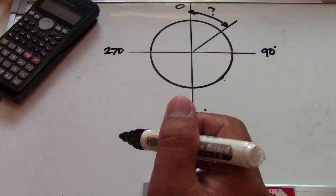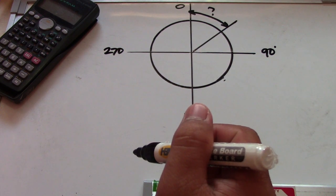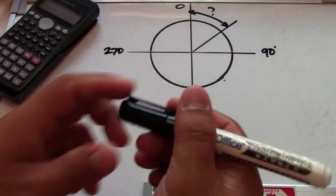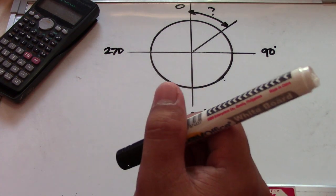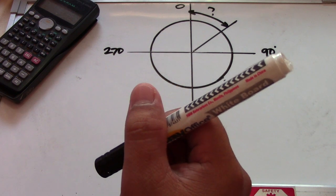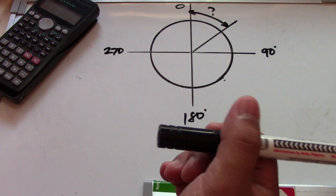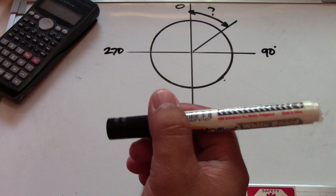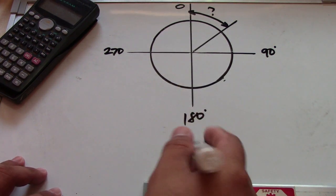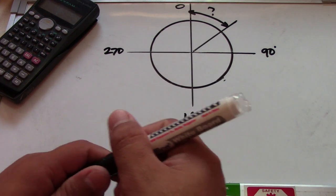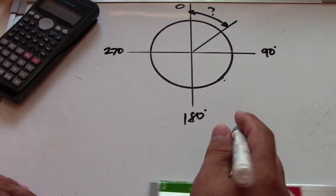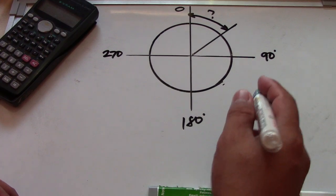To find the arc length, we have a formula: radius multiplied by degrees multiplied by 0.01745. We also have a second formula: outside diameter times 3.1416 divided by 360, times the given degrees.